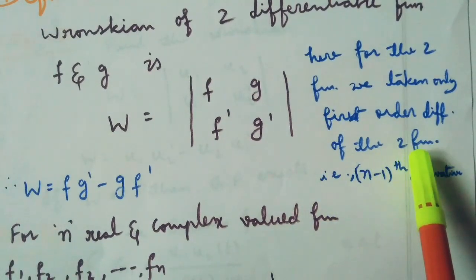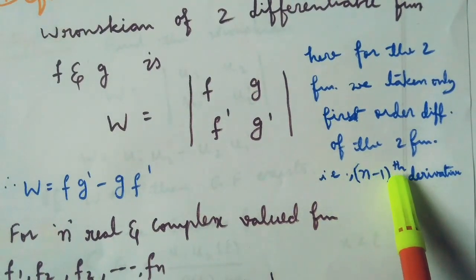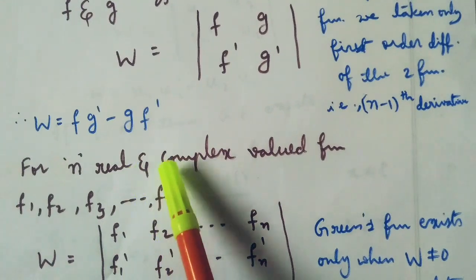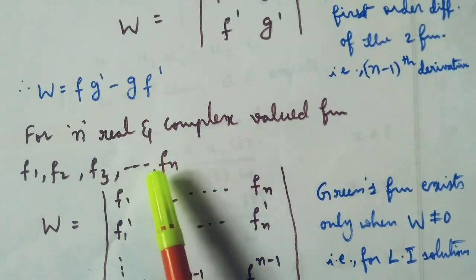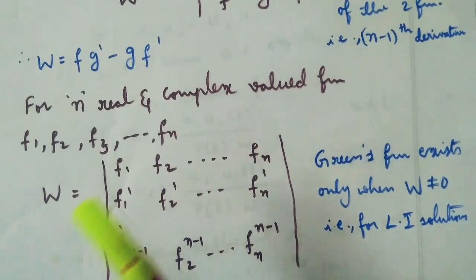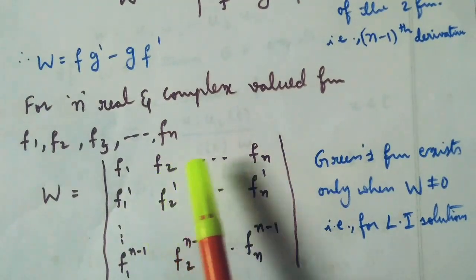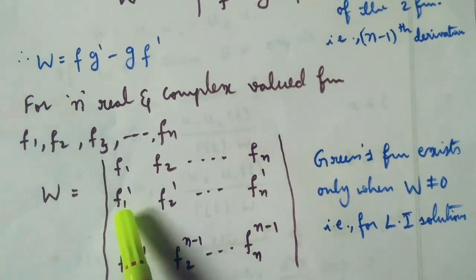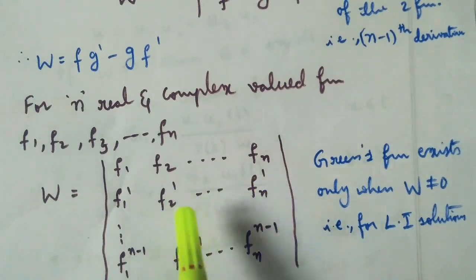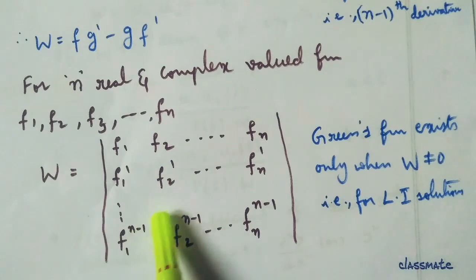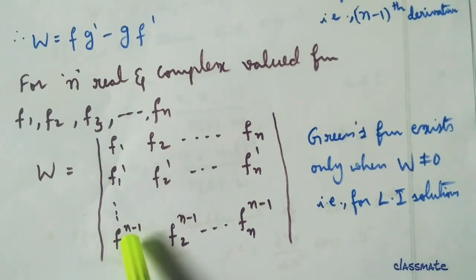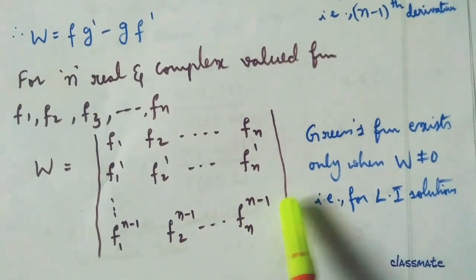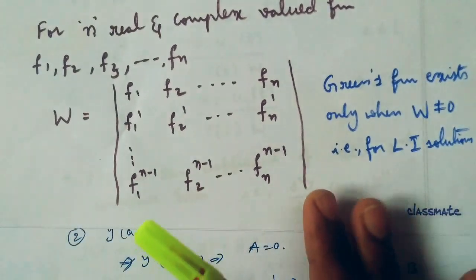For n functions, we can take up to n minus 1 derivatives. For n real and complex valued functions f1, f2, and so on fn, W is equal to the determinant whose first row is the functions f1, f2, and so on fn, and the last row is the n minus 1 derivatives f1^(n-1), f2^(n-1), and so on fn^(n-1). This is the Wronskian.